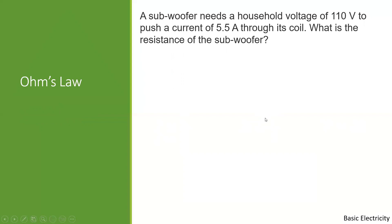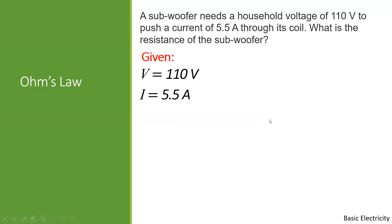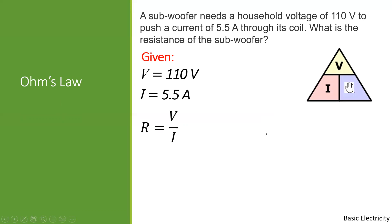Problem number three: a subwoofer needs a household voltage of 110 volts to push a current of 5.5 Amperes through its coil. What is the resistance of the subwoofer? Given: V = 110 volts, I = 5.5 Amperes. The missing part is resistance, so R = V / I = 110 / 5.5 = 20 Ohms.